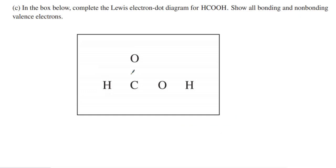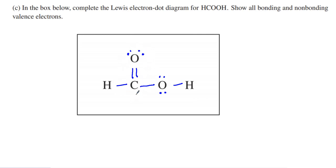Part C asks us to draw a Lewis electron dot diagram. H's always do single bonds. For the COH portion, we get a bent structure with two unshared pairs at about 105 degrees — that's the hydrogen bonding site. For the COOH portion, we have a double bond with two unshared pairs, giving a trigonal planar 120-degree shape, SP2 hybridized. That is the Lewis electron dot diagram for HCOOH, methanoic acid.